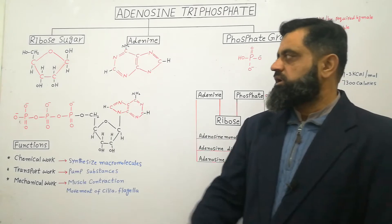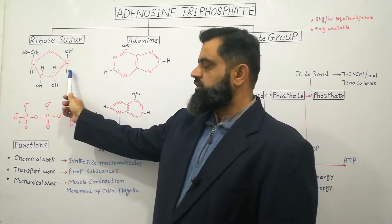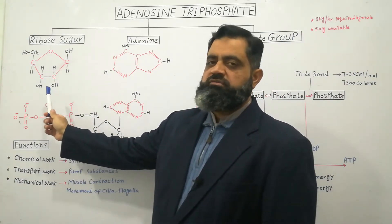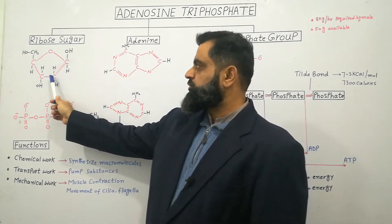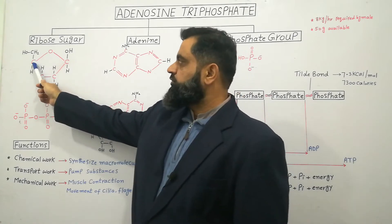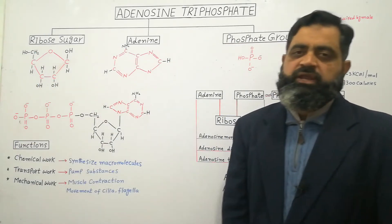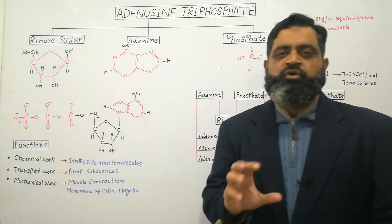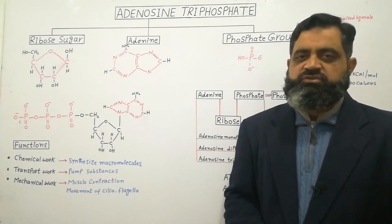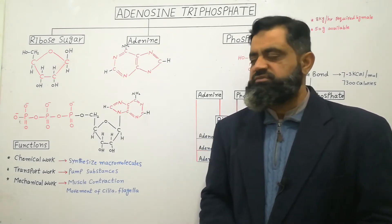This is the ring structure of a ribose sugar. It contains 5 carbons: 1, 2, 3, 4, and 5. The remaining bonds are attached, and oxygen and hydrogen are also attached with it.